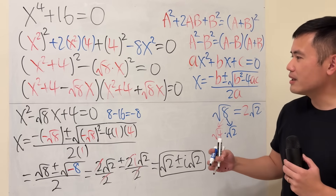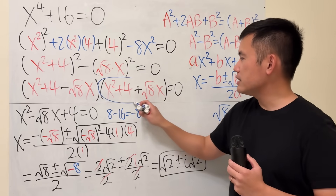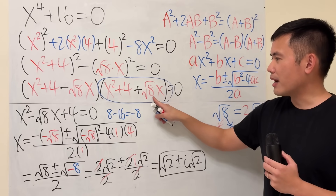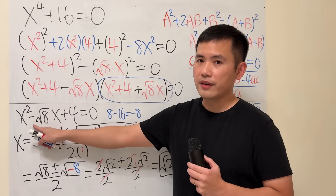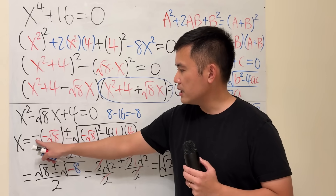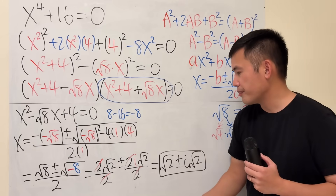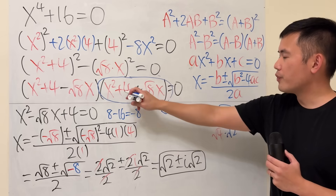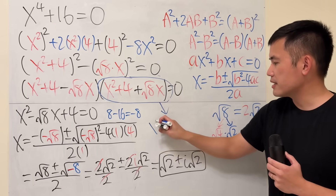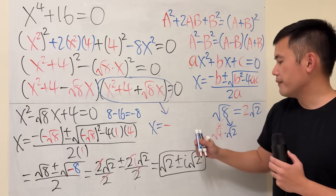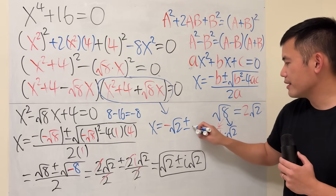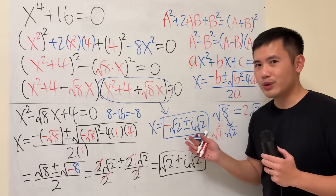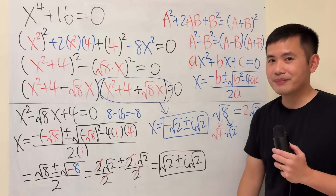For the second factor, putting it equal to 0 gives a positive square root of 8 instead of negative, so the result is just the negative of the first case. The two additional solutions are x equals negative square root of 2 plus or minus i square root of 2. Altogether, we have a total of four solutions for the equation.